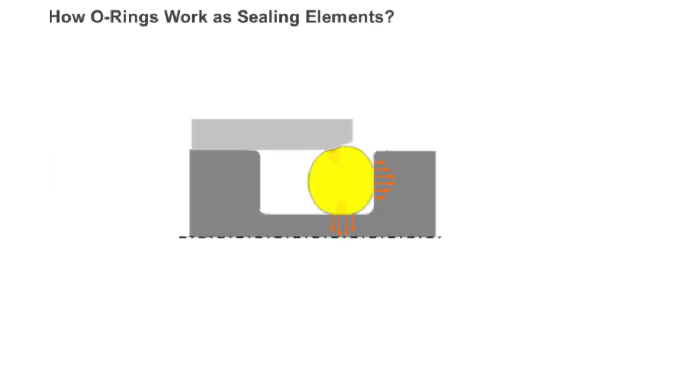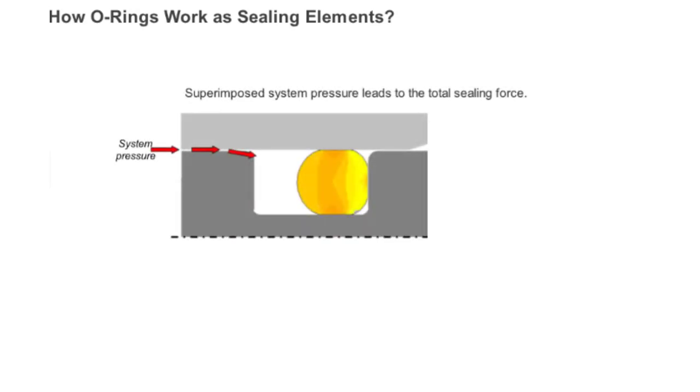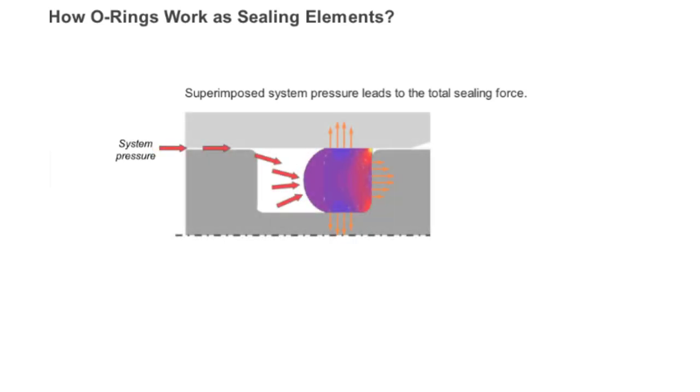In order to achieve leak tightness, an O-ring always must be compressed. This is called the initial compression and results in the initial sealing force. The initial compression enables the elastomeric O-ring to adapt to the mating surface and compensates for production tolerances. Thus, it is essential for the sealing function of an O-ring. The leak tightness of the O-ring increases when under system pressure, which leads to the total sealing force.